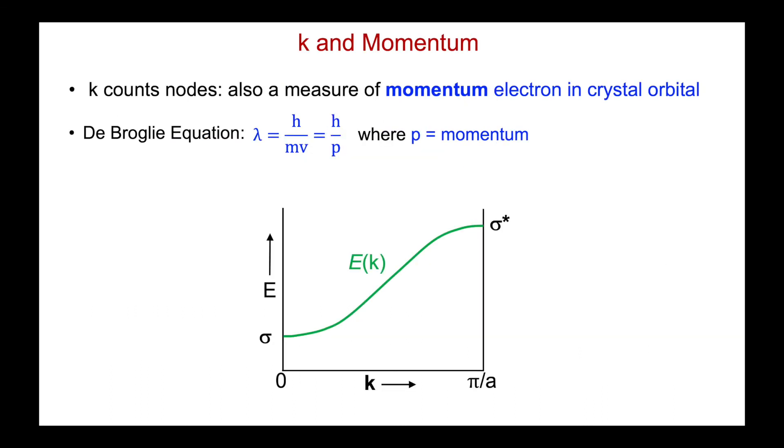Often in band diagrams, we'll see the x-axis not just labelled as k, but also as momentum. So we know k counts nodes. It's also a measure of the momentum of the electron in a crystal orbital.